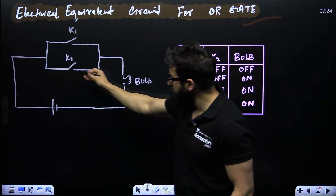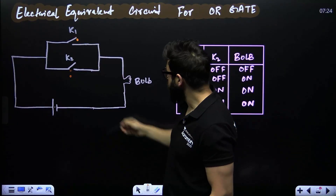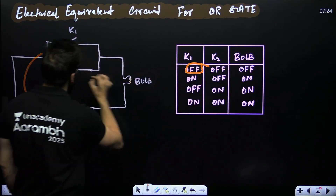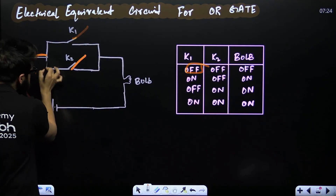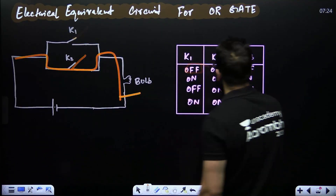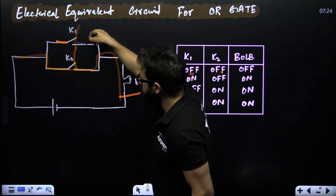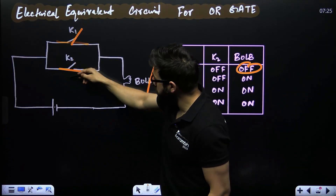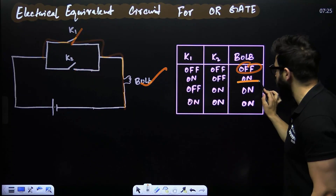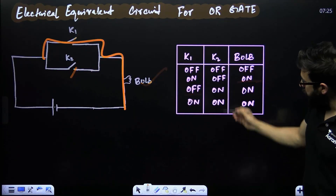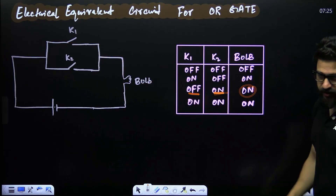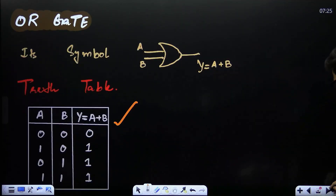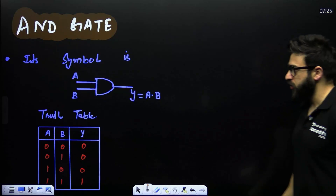The electrical equivalent circuit of the OR gate: you have key one and key two (switches in parallel) connected to a bulb. If key one is off and key two is on, current can flow through that path and the bulb glows. If both are off, current cannot reach the bulb — bulb remains off. If either switch is on, current can flow and the bulb remains on. This truth table exactly matches the OR gate, so this circuit behaves like an OR gate.